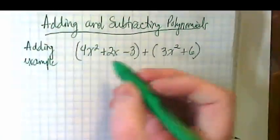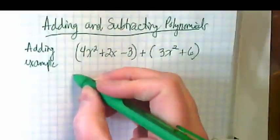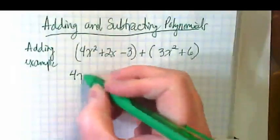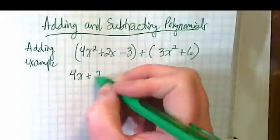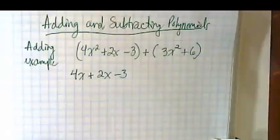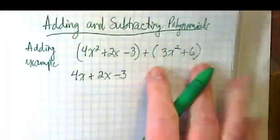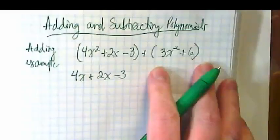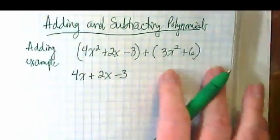When you see polynomials to be added, I want you to write the first polynomial and then I want you to take the second polynomial and line it up underneath the first one with like terms lined up.